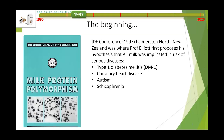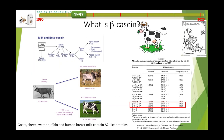At the beginning, Professor Bob Elliott first wrote his hypotheses about A1 milk and its implication in a number of different diseases — from diabetes, heart disease, autism, and schizophrenia. That was at a conference held in Palmerston North, where I was working at DRI at the time, and it caused a bit of a stir.